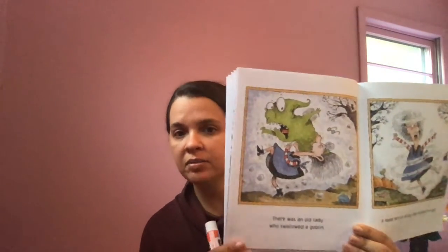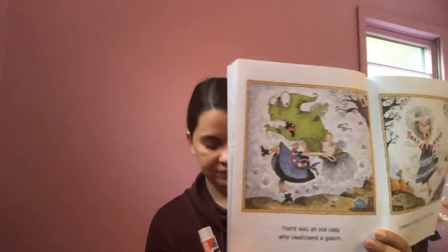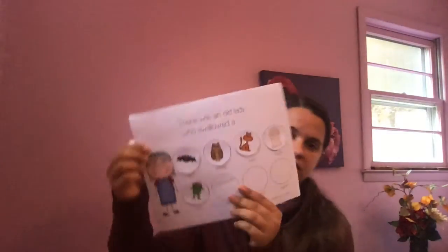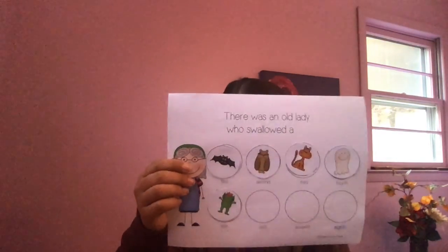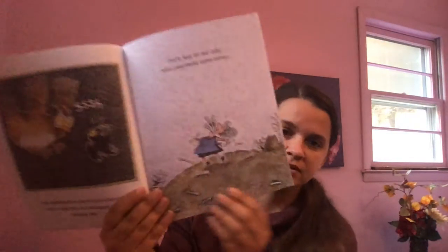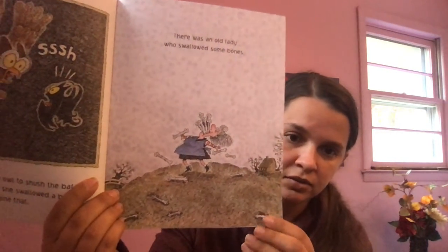After the ghost, she swallowed the green goblin. Can you find the green goblin, or color in your goblin green? I found mine to glue in the fifth box. What did the old lady swallow after the goblin? Next, she swallowed some bones. Can you find the picture to glue or color?